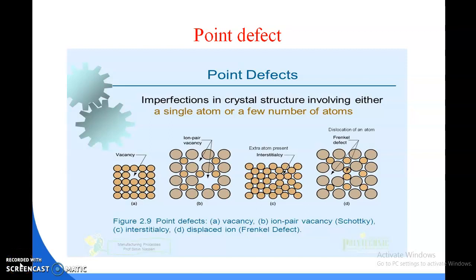Next slide is here about point defect. We have studied about what is defect or what is imperfection of crystal material. There are imperfections in crystal structure involving either a single atom or a few number of atoms. That is called point defect.